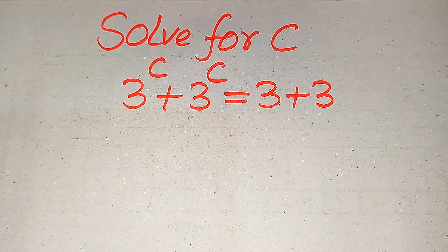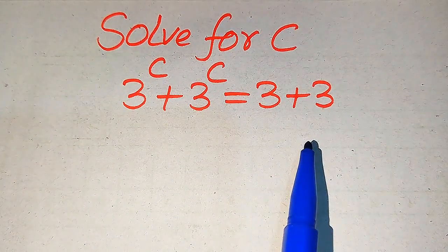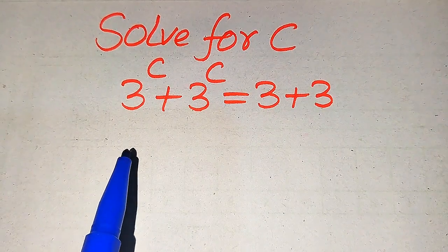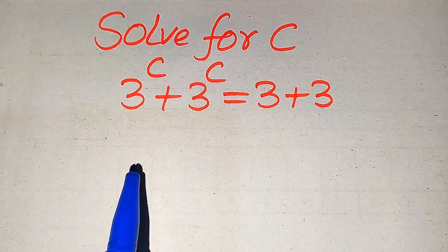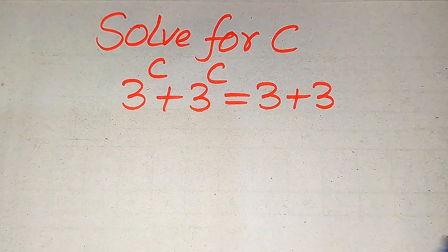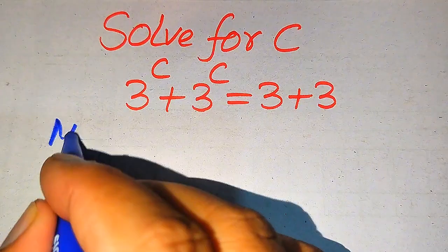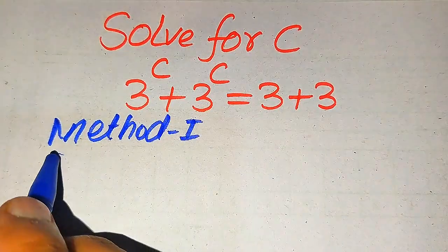Hello everyone. How to solve this problem for the values of C, if we have 3 to the power of C plus 3 to the power of C equals 3 plus 3, and we solve this problem for all the values of C. Here first we find all the values of C, and at the last we will verify which of the roots of this equation are solutions and which are extraneous roots. We solve this problem using two methods.